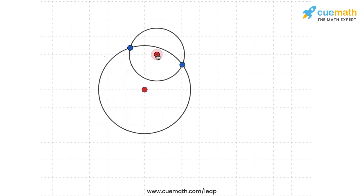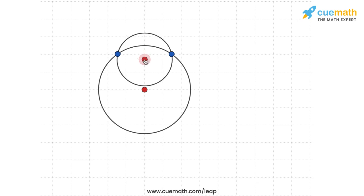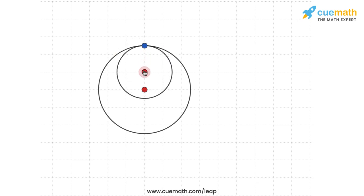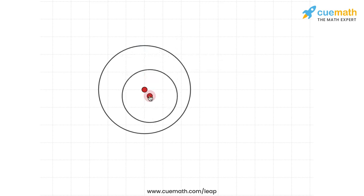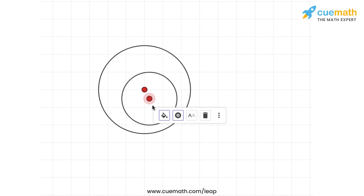Now if I take the smaller circle inside the larger circle, at some point the smaller circle will touch the larger circle from the inside, so we again have one common point. And if the smaller circle lies completely inside the larger circle, then we again see that there are no common points.